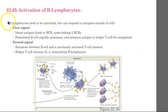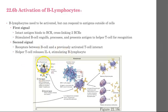Now let's talk about B cell activation. B cells can respond to antigens and eventually create antibodies once activated. The first signal occurs when an intact antigen binds to the B cell receptor — this is called cross-linking when two B cell receptors attach to the antigen. The stimulated B cell then engulfs, processes, and presents that antigen, since B cells are also antigen presenting cells.